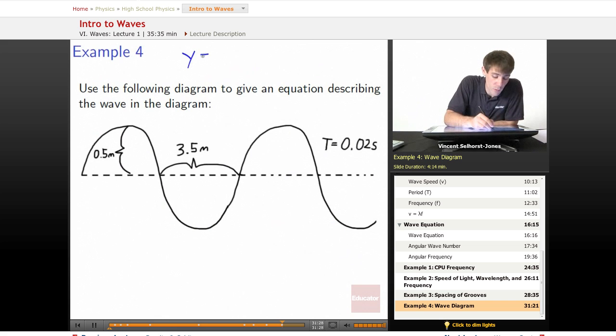To begin with, let's remember y equals A, the amplitude, times sine, the function that allows us to have periodicity and oscillations occur algebraically, kx minus omega times time.